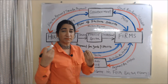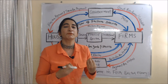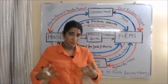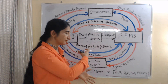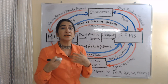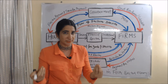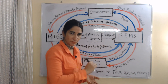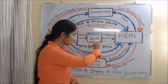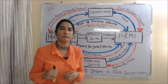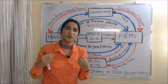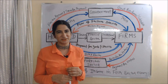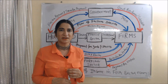Firms also receive money from the foreign sector through their exports. When firms export goods and services to the foreign sector, in return they receive money — this is called receipt for export. This is all about the circular flow of income in two, three, and four sector economies. Thank you so much for watching this video.